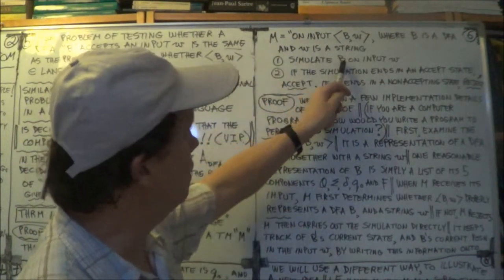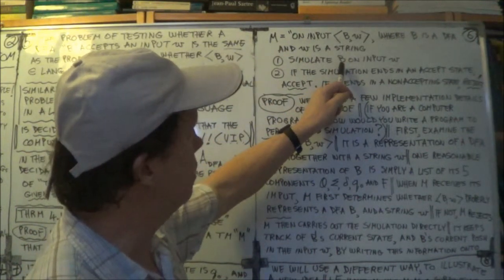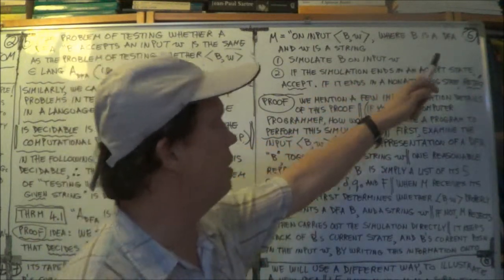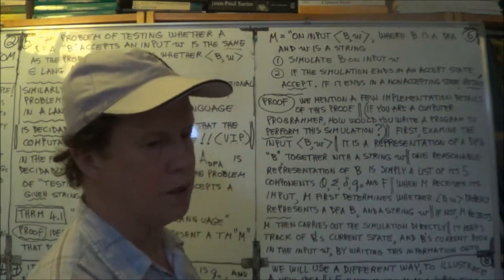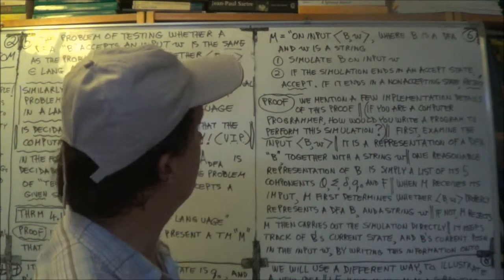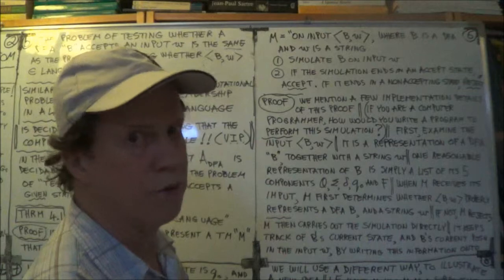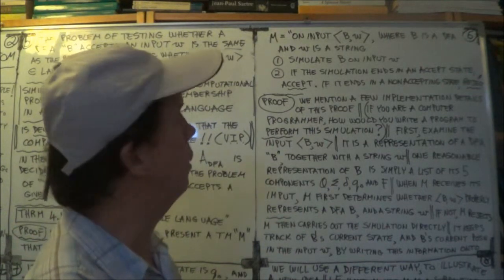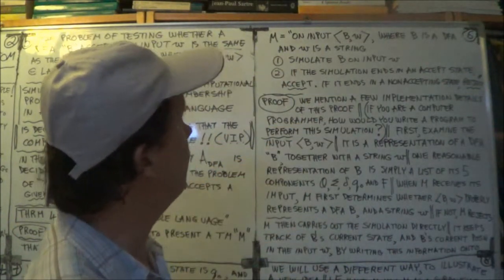So this machine M is going to simulate this machine. This is a Turing machine, and this is a finite automaton, it's a DFA, so there's only one in each case, there's only one next state, it's a deterministic finite automaton. Whereas a Turing machine is an infinite machine, you have infinite memory. So we're going to have M simulate B.